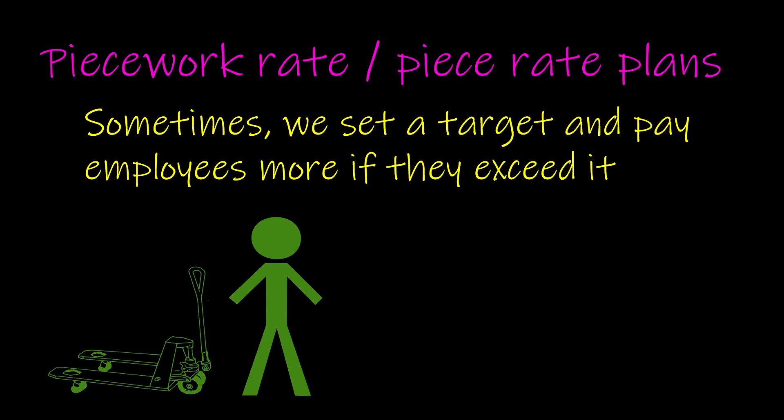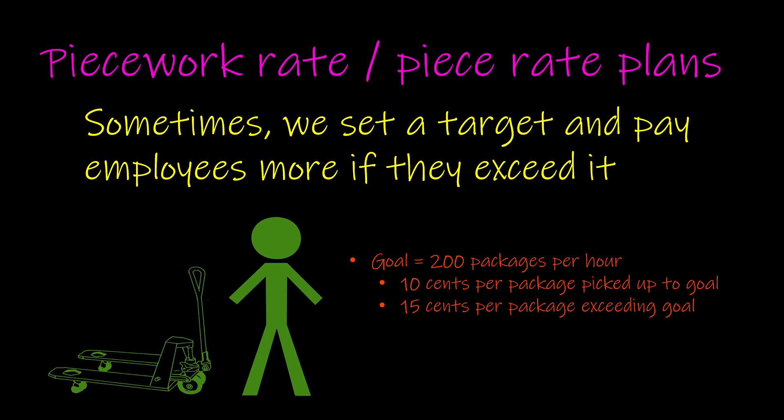Sometimes we want to set a target and pay our employees a little more if they exceed it. The idea here is that we have a target that we think is what one person can do. But if all of our employees exceed that target by a little bit, we can avoid hiring a new person. It's a little bit less expensive to pay our employees a little bit more to be more productive than it is to bring a new person on board. So in this example, we'd start with setting our goal of 200 packages per hour, which works out to 1,600 items for the entire eight-hour shift. We're going to pay 10 cents per package picked up to the goal, so the first 1,600 items get paid at 10 cents per item, but everything that exceeds 1,600 items is going to be paid at 15 cents per package.